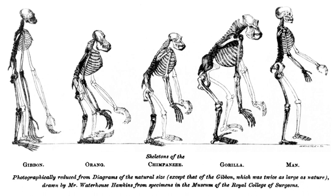A phylogenetic tree or evolutionary tree is a branching diagram showing the evolutionary relationships among various biological species or other entities—their phylogeny—based upon similarities and differences in their physical or genetic characteristics. All life on Earth is part of a single phylogenetic tree, indicating common ancestry.